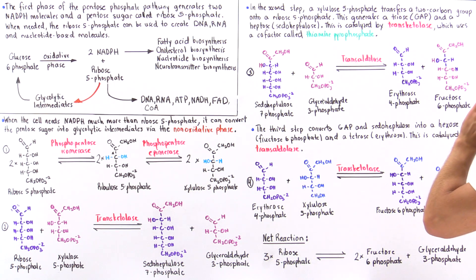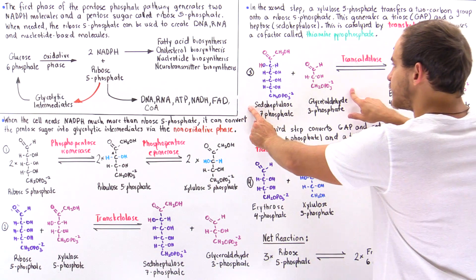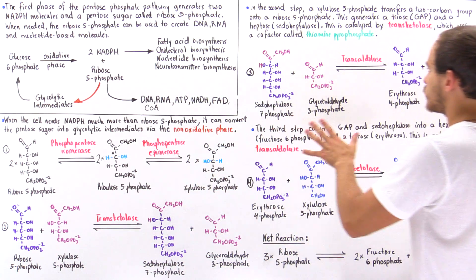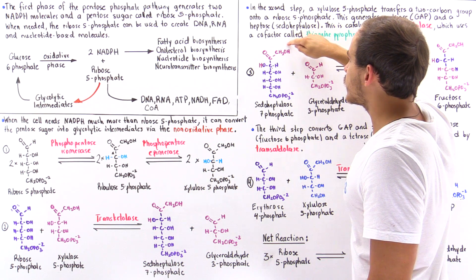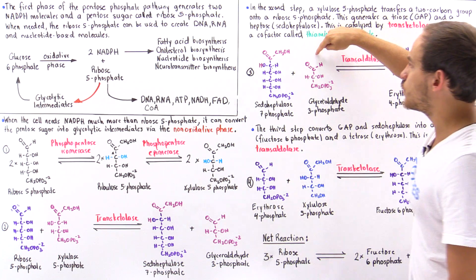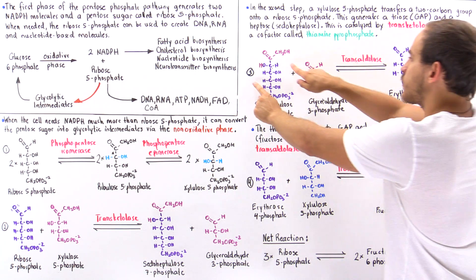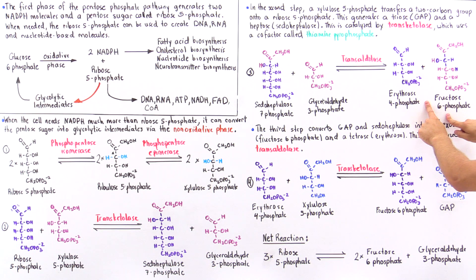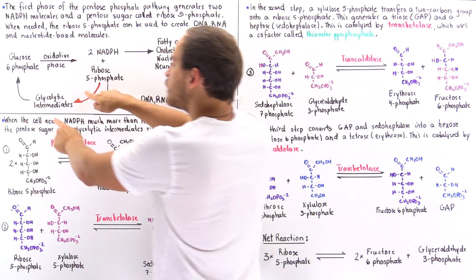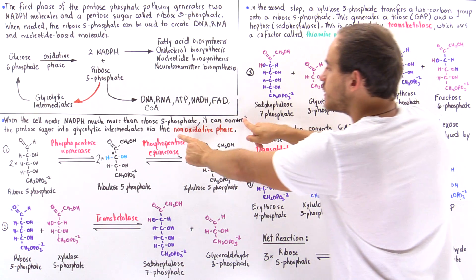In process 3, the products from process 2 — sedoheptulose 7-phosphate and glyceraldehyde 3-phosphate — act as reactants. The enzyme transaldolase transfers a 3-carbon section from the 7-carbon sugar onto glyceraldehyde 3-phosphate. This transforms the 7-carbon sugar into erythrose 4-phosphate, a 4-carbon sugar, and the 3 carbons added to GAP form fructose 6-phosphate, a 6-carbon glycolytic intermediate.